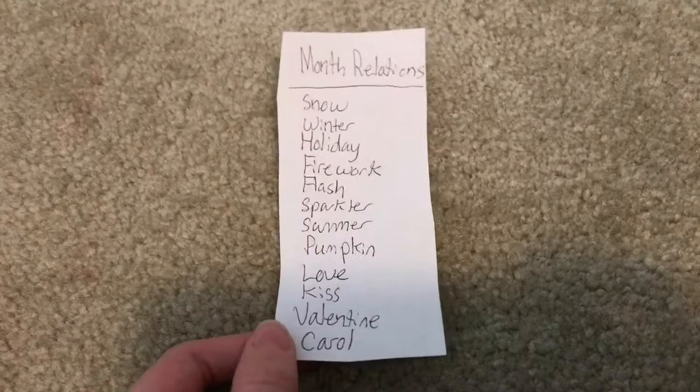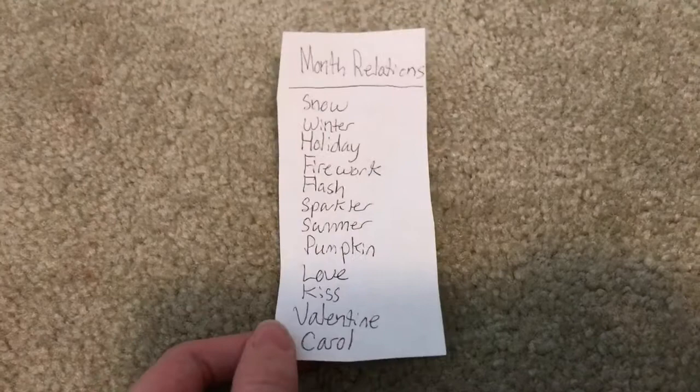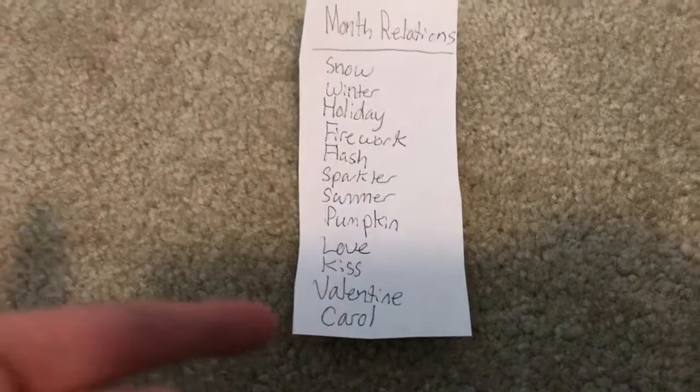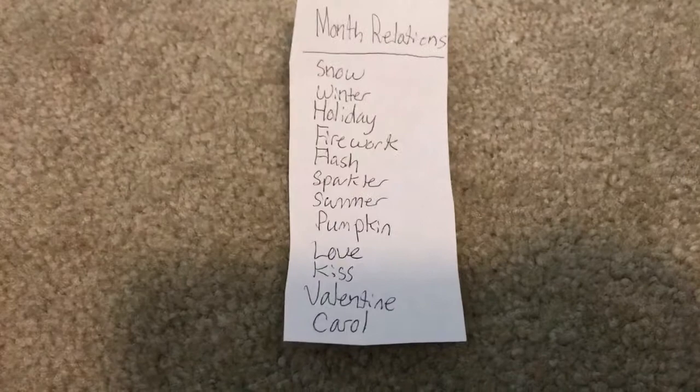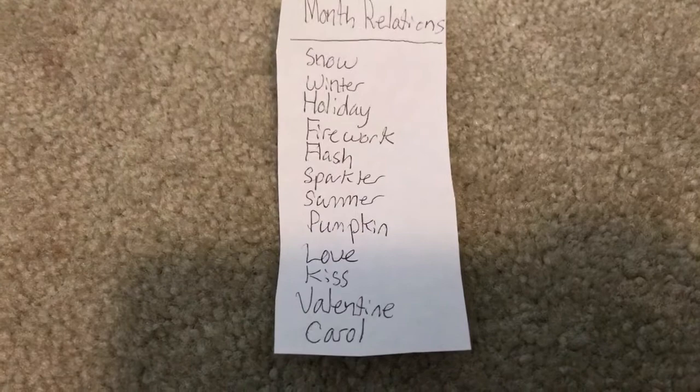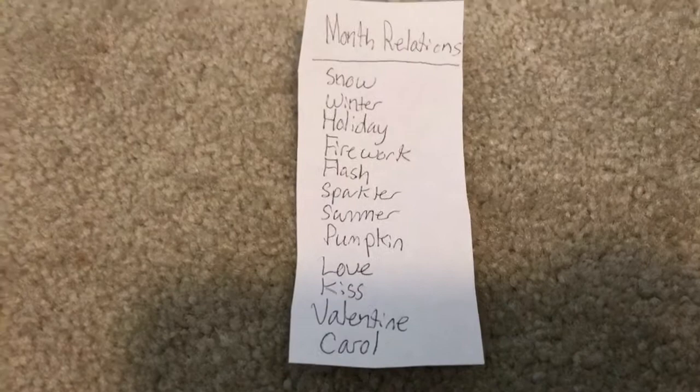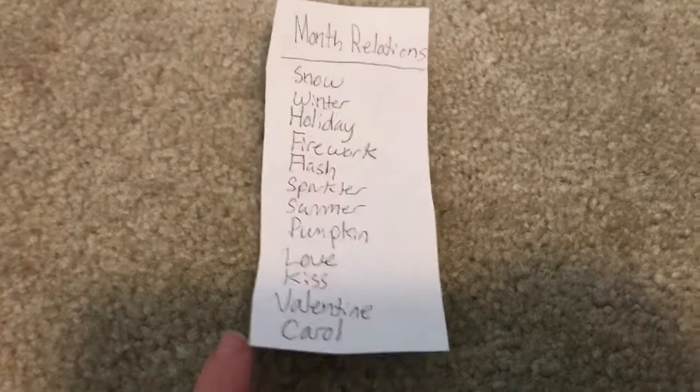And you could also do names based on when you get them. Like Snow or Winter for December or January, or Holiday for December. If you get it in July you could do Firework, Flash, or Sparkler, and then Summer if you get it during June or July. You could do Pumpkin if you get it in October, and Love, Kiss, and Valentine for February. Another Christmas one would be Carol, you know, like a Christmas carol.